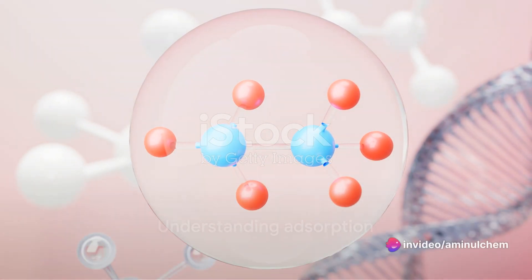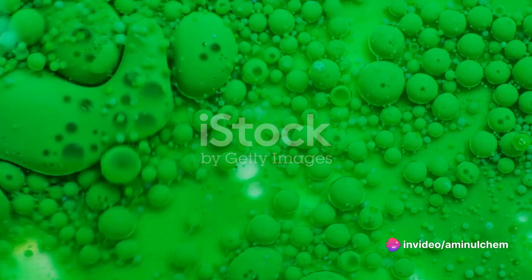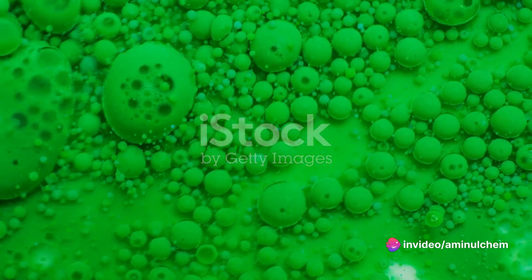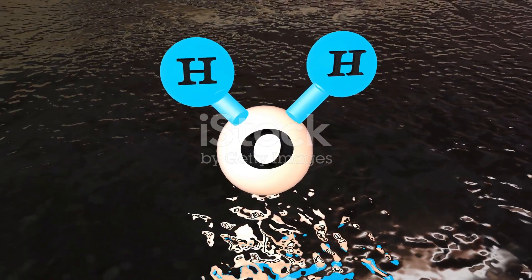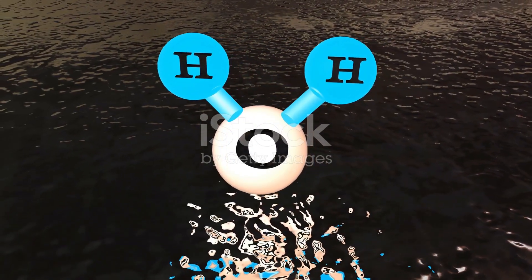To grasp the Freundlich model, one must first understand what adsorption is. Essentially, it's a process where atoms, ions, or molecules from a substance adhere to a surface. Picture a sponge soaking up water. The water molecules are adsorbed onto the surface of the sponge.